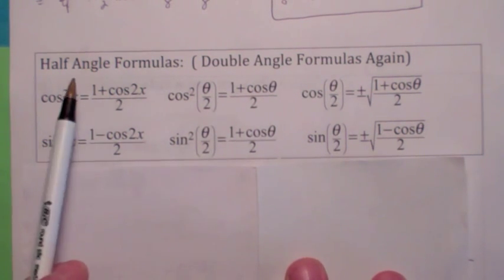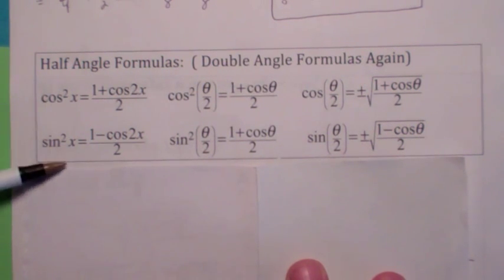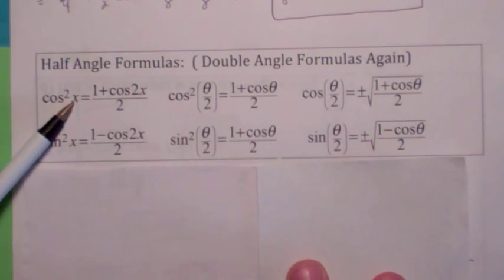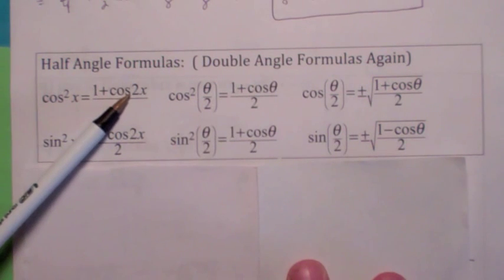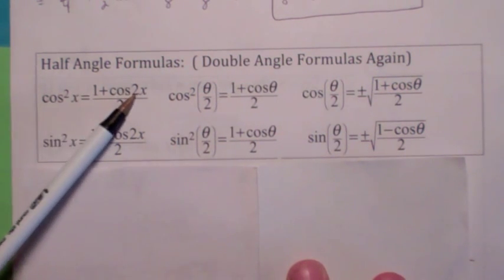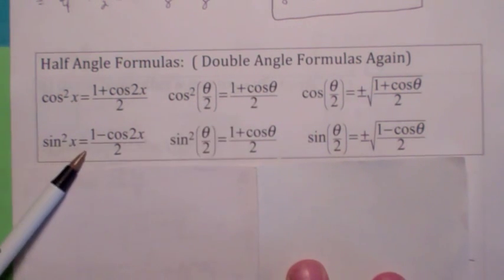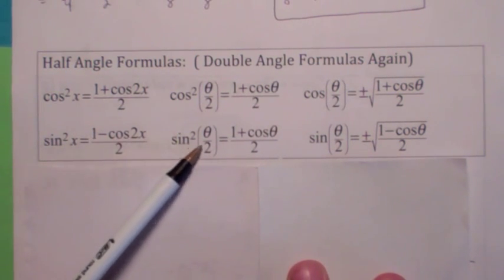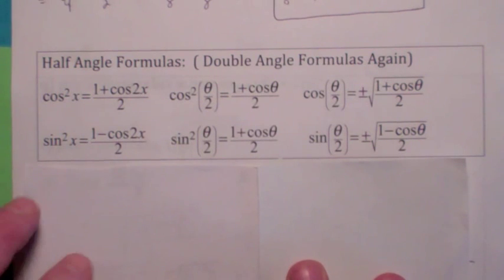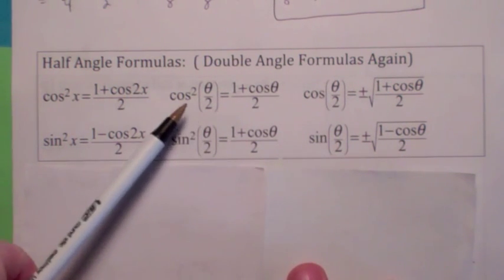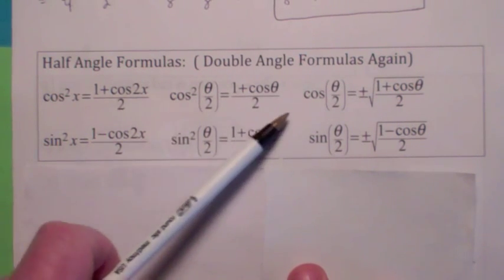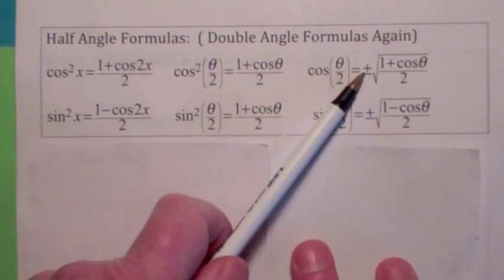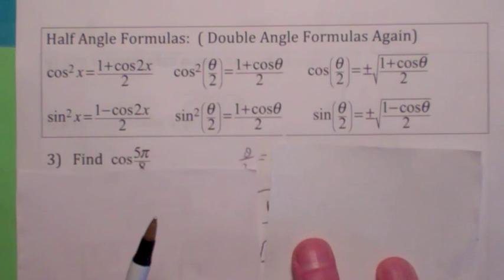The same is true for what are called the half angle formulas — these are just the power reduction formulas we talked about. This angle here is twice this one; you could also say this angle is half of the other. So instead of calling them x and 2x, call them theta over 2 and theta. The tricky thing is when you solve for cosine of theta over 2, you have to know what quadrant you're in before you know whether to use the positive or negative square root. Same is true with the sine of half the angle.